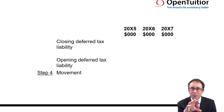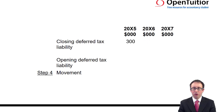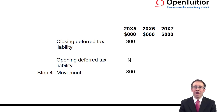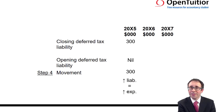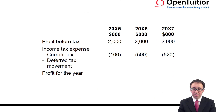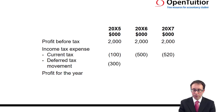That gets the position statement right, but what about performance? The performance comes from looking at the movement in position. We have a closing deferred tax liability of 300 and an opening deferred tax liability of zero. The movement is 300, and that increase in the liability is an increase in the expense — we credit the liability and debit the expense, taking it from zero up to 300. Adding that deferred tax movement on top of the current tax of 100 gives a total tax expense of 400, and a profit for the year of 1,600.